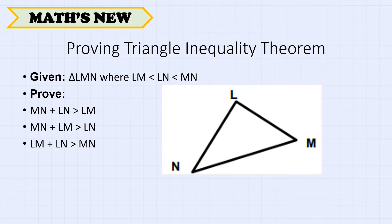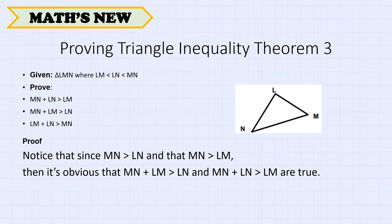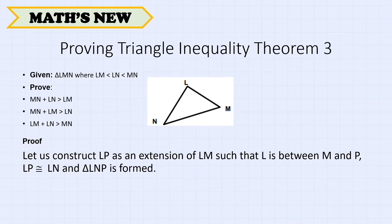Since MN is greater than LN and MN is greater than LM, it is obvious that MN plus LM is greater than LN and MN plus LN is greater than LM. To prove that LM plus LN is greater than MN, we construct LP as an extension of LM such that L is between M and P, and LP is congruent to LN, forming triangle LNP.